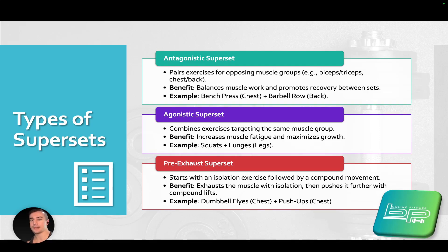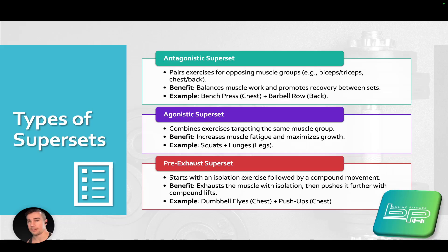An agonistic superset combines exercises targeting the same muscle group. The benefit is it increases muscle fatigue and maximizes growth. Muscle fatigue is necessary for muscle growth and repair — it's not a bad thing. An example would be squats and lunges, or a tricep extension paired with a tricep pushdown, using those same muscles in quick succession.